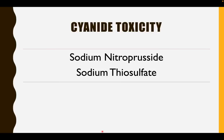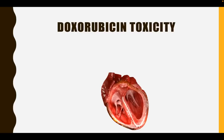What is the antidote for cyanide toxicity? Remember, cyanide toxicity is usually caused by the antihypertensive sodium nitroprusside. Sodium nitroprusside causes abrupt vasodilation and an abrupt drop in blood pressure; hence it is used for hypertensive emergency. However, one of the side effects is cyanide toxicity. The antidote is sodium thiosulfate.